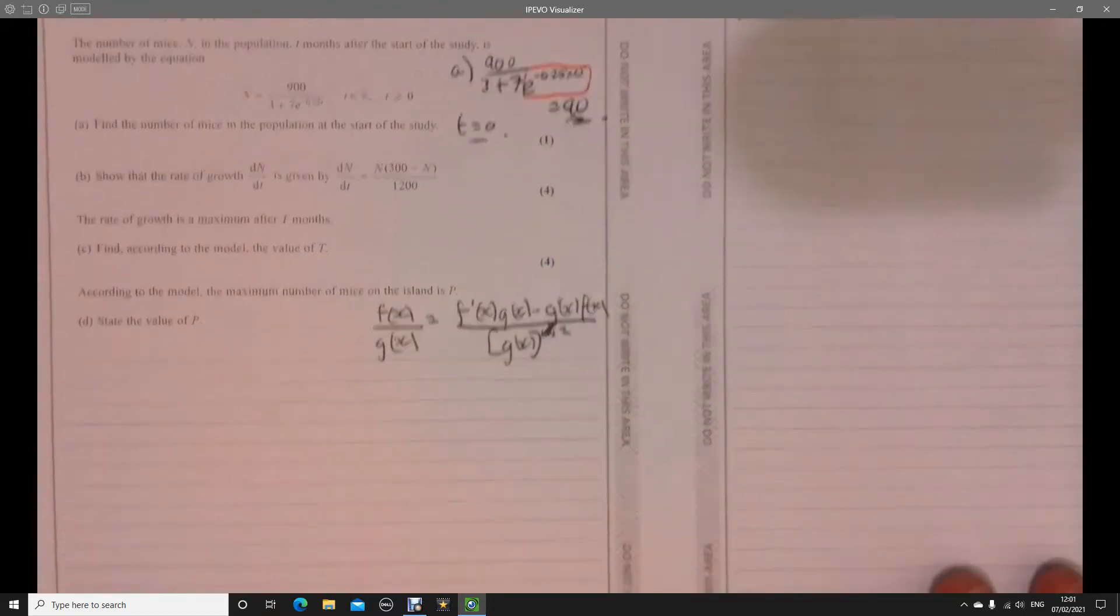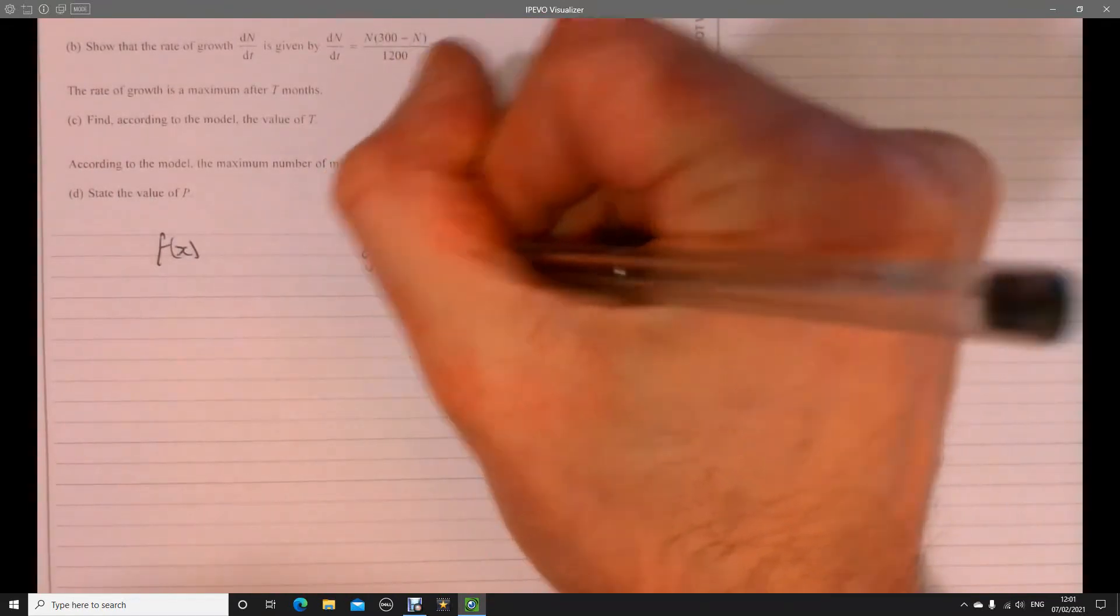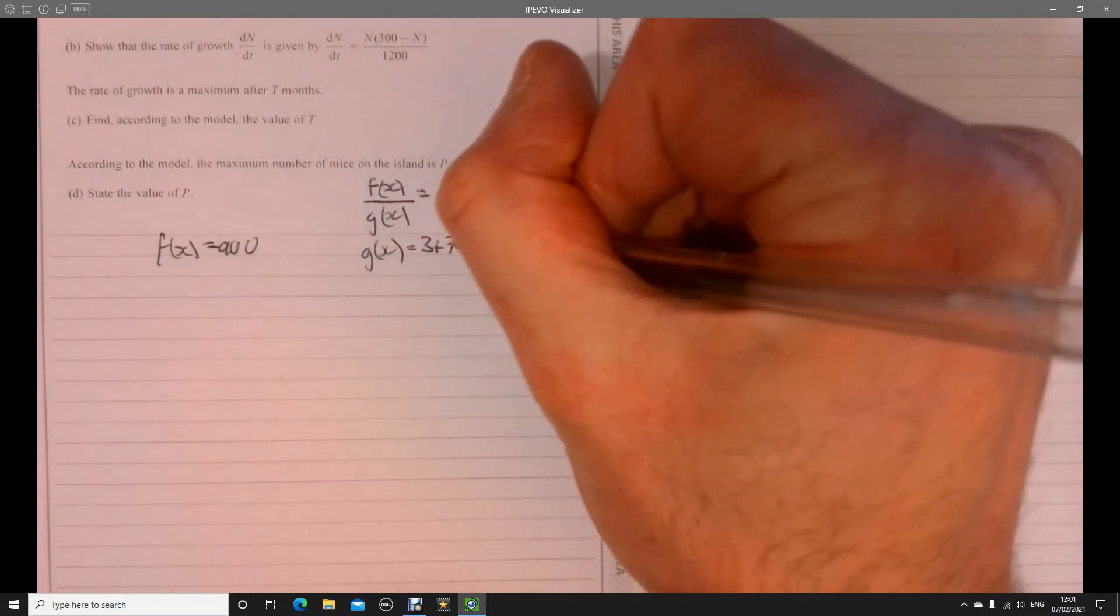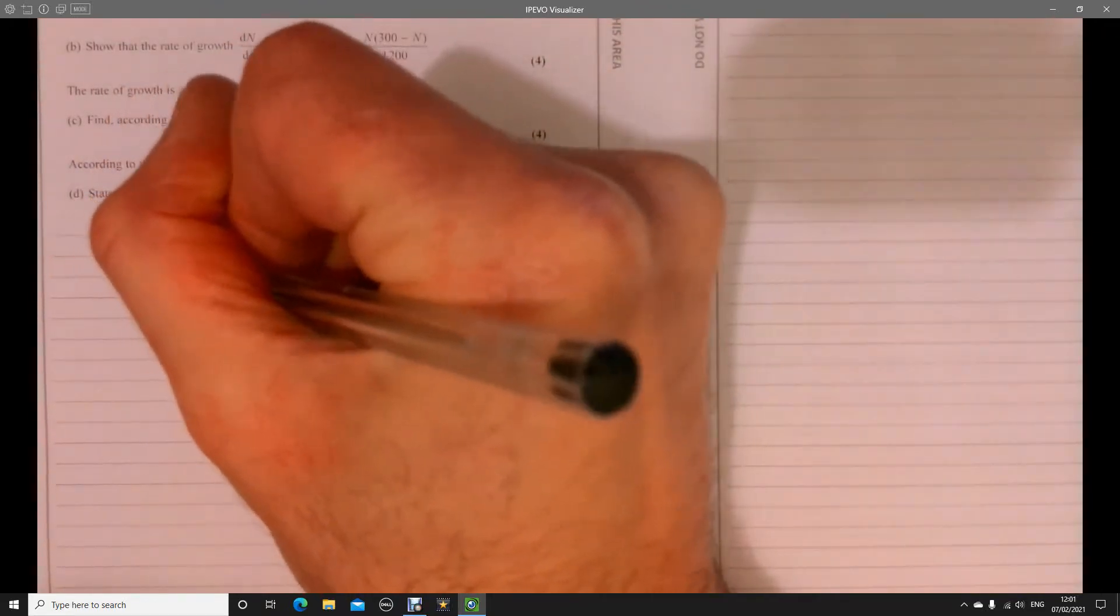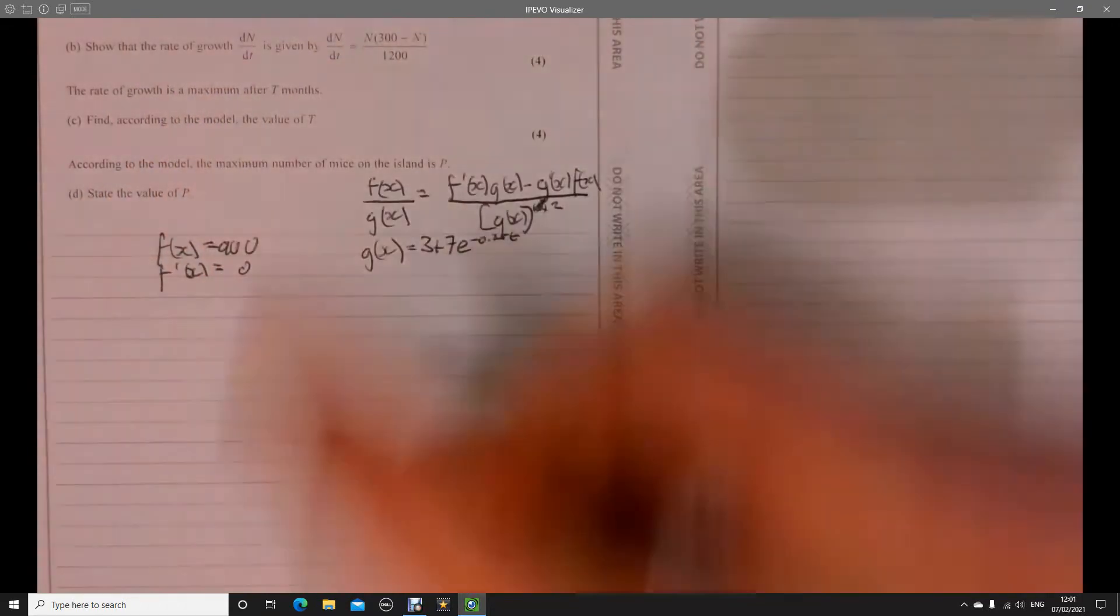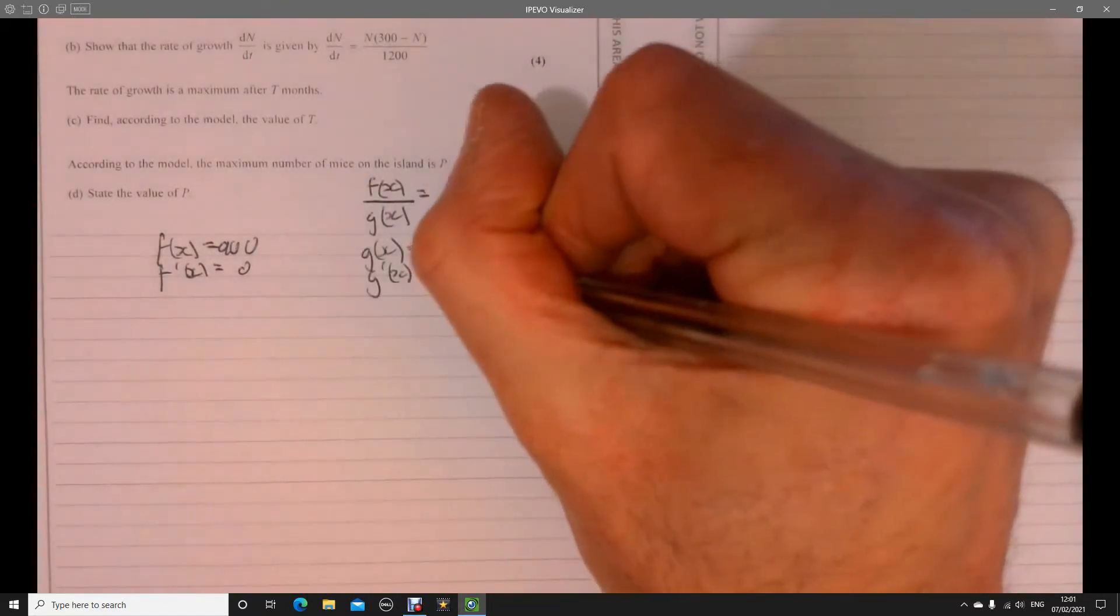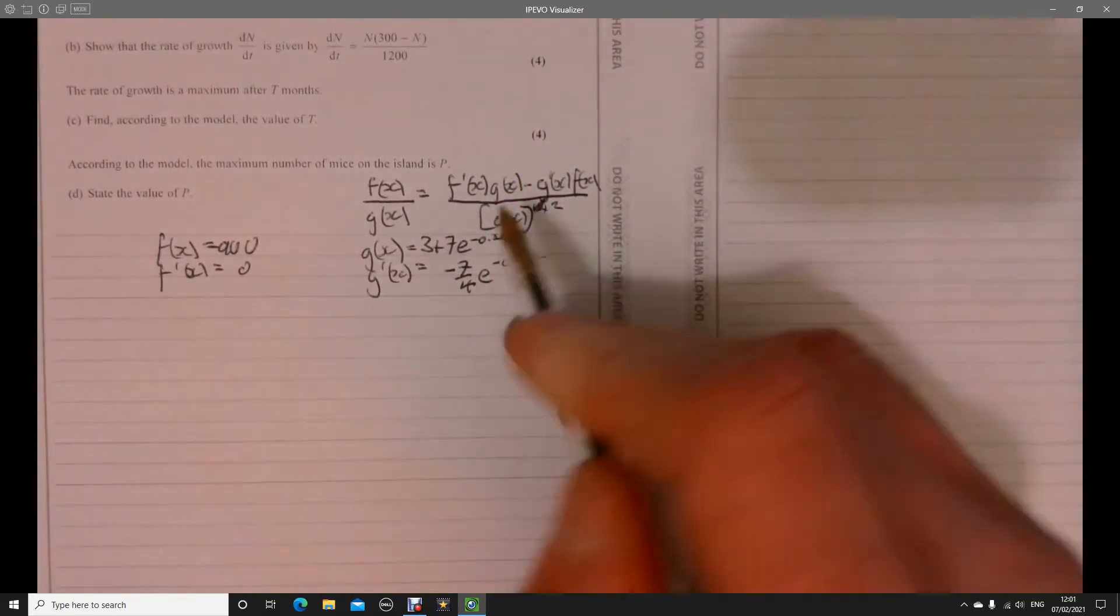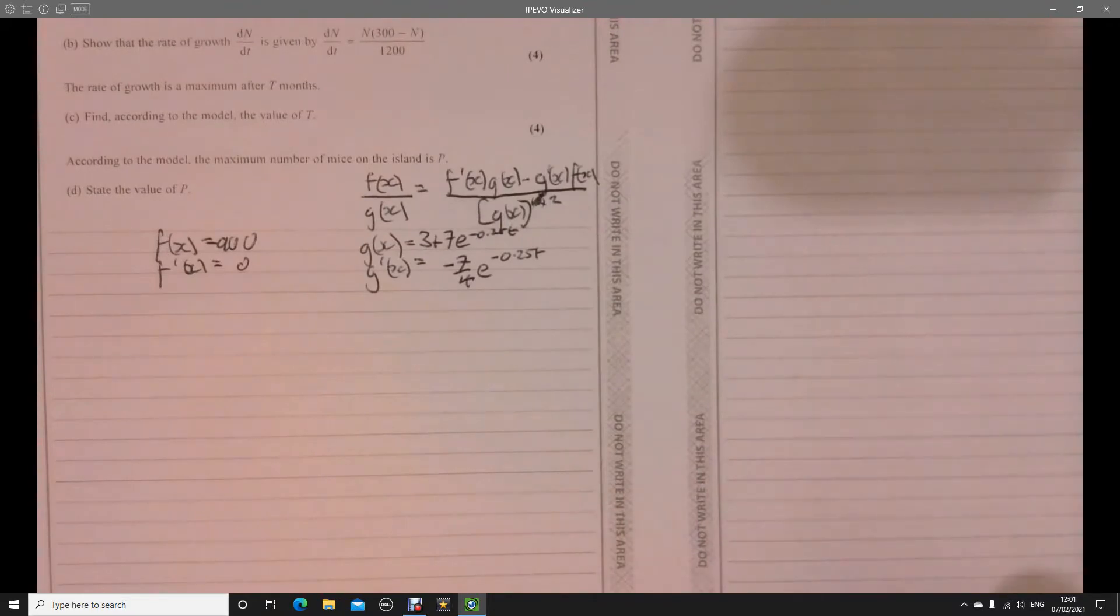So let's fill in the information we have so far. We know fx is just 900, and gx is the denominator, so that was 3 plus 7e to minus 0.25t. Now let's differentiate these two things. Well, that's like 0, it's nothing. And then differentiate this one, just a little bit of chain rule. That's going to give us minus 7 over 4e to the minus 2.5t. Now let's piece it together.